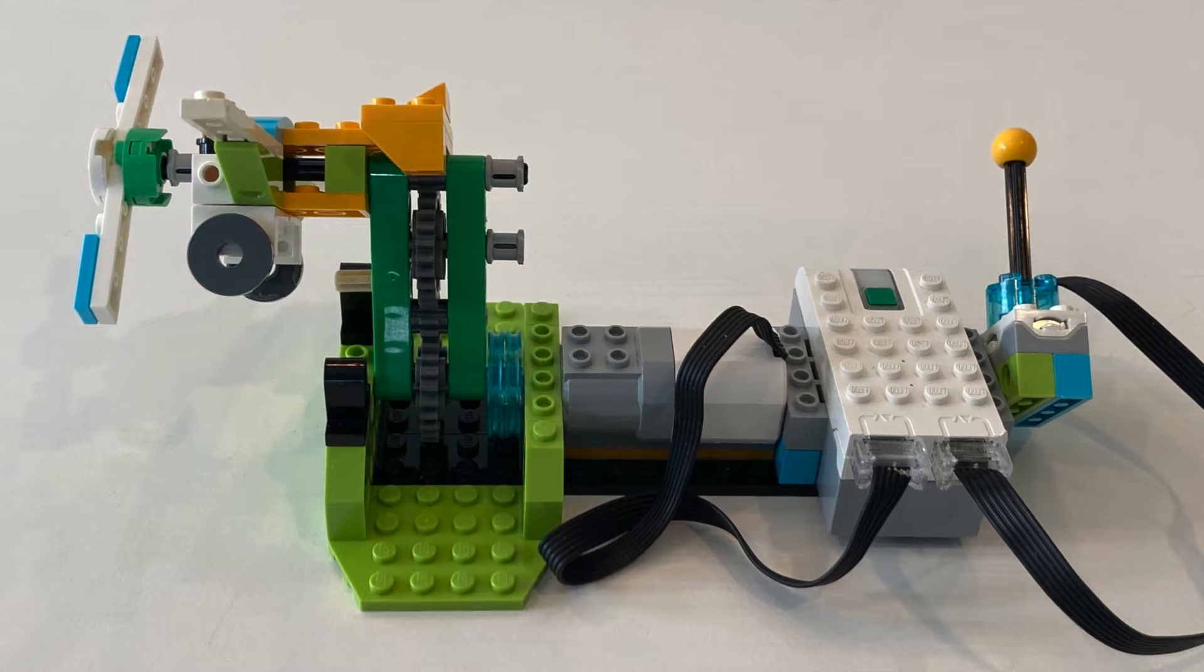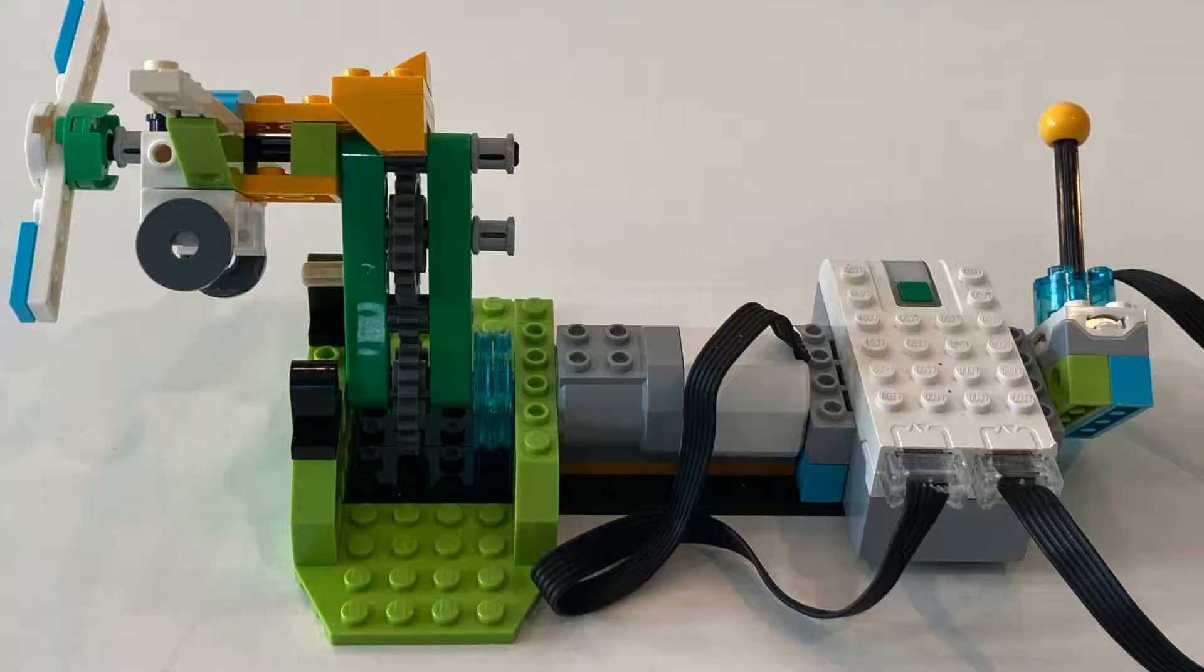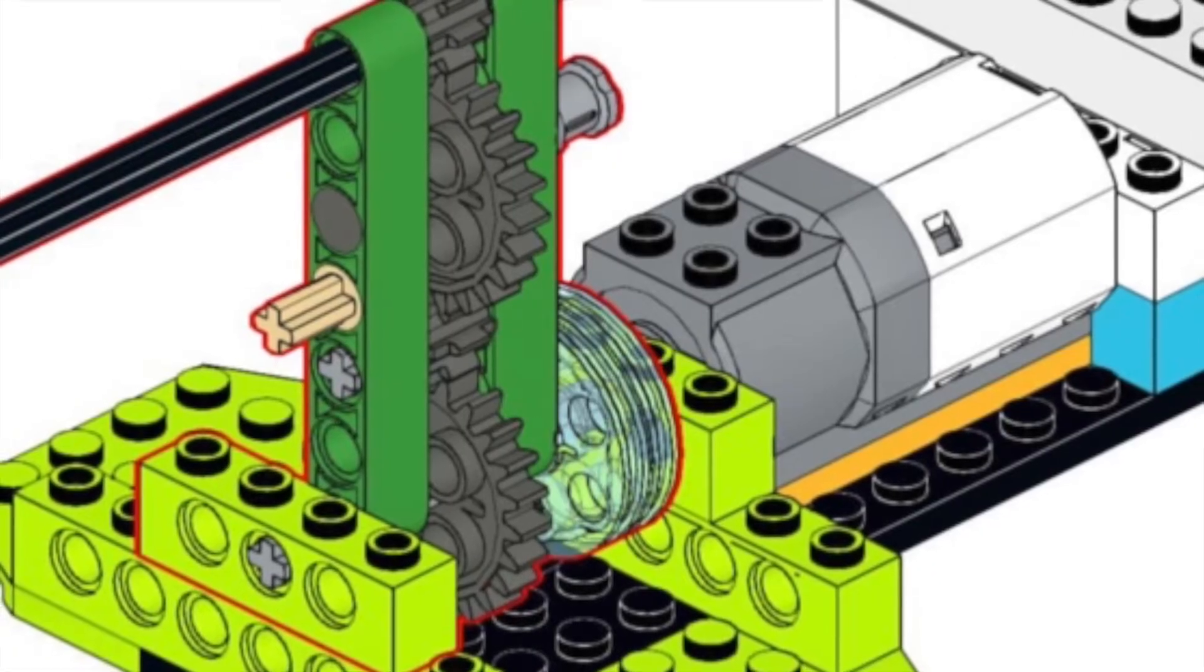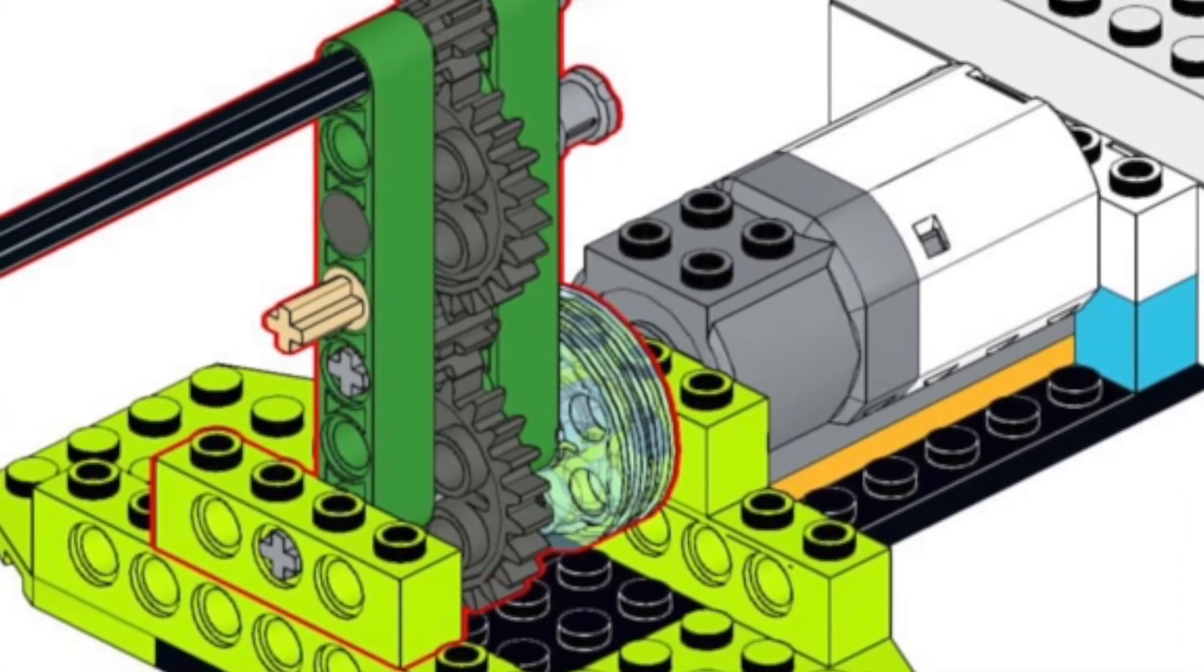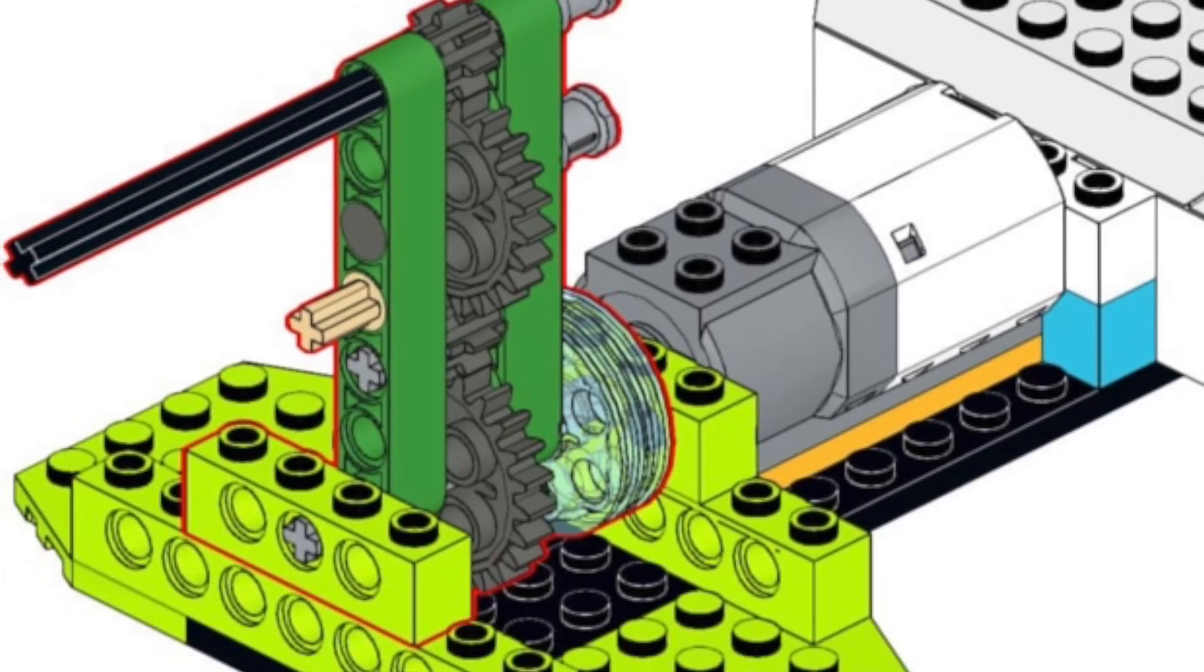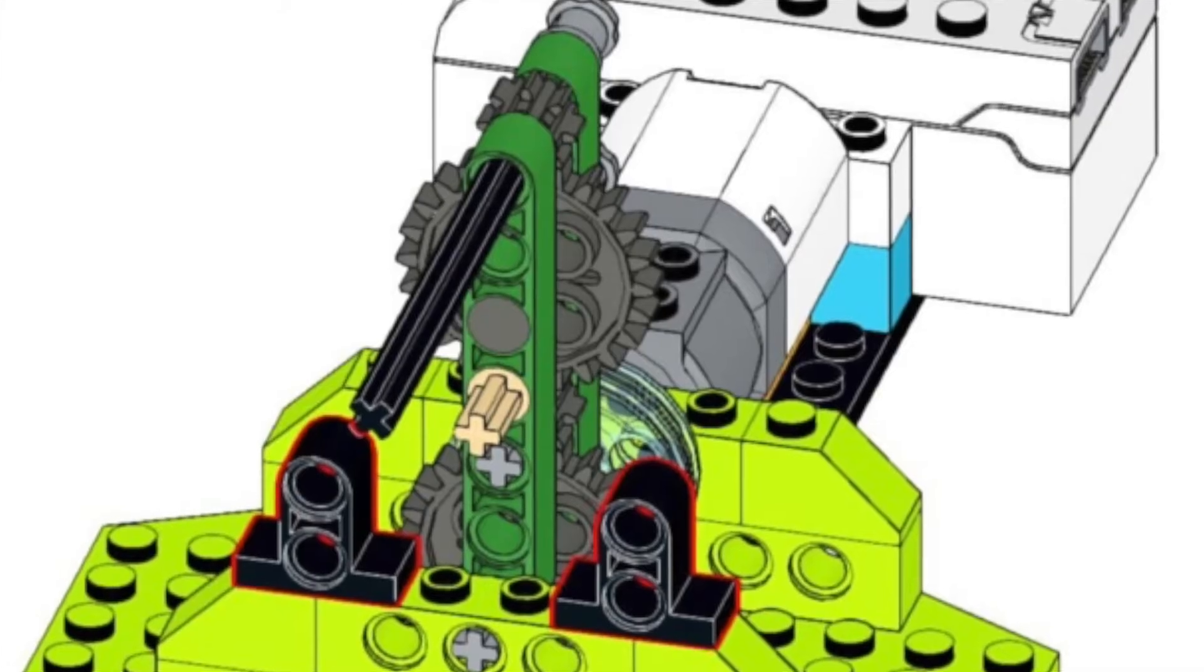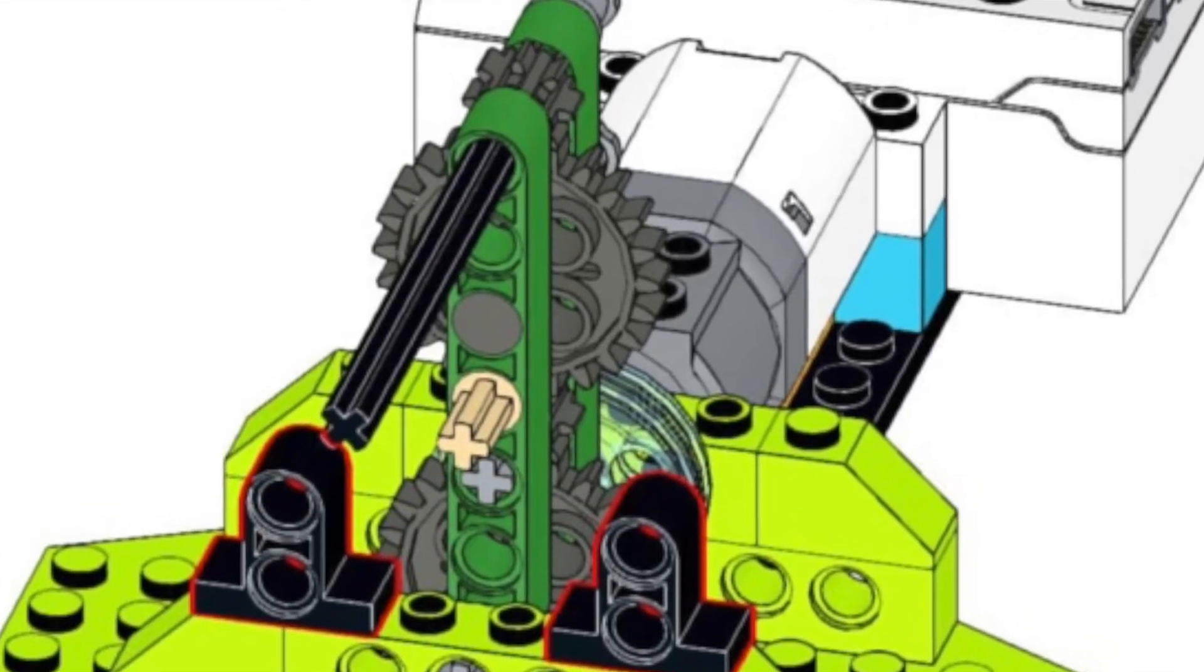However, the LEGO beams are only connected to the rest of the frame at one single point. You need two points of connection to fully secure a beam, so when the gears start to spin, the beams are free to rotate slightly to the left or right until a tan peg hits the black pieces on either side.